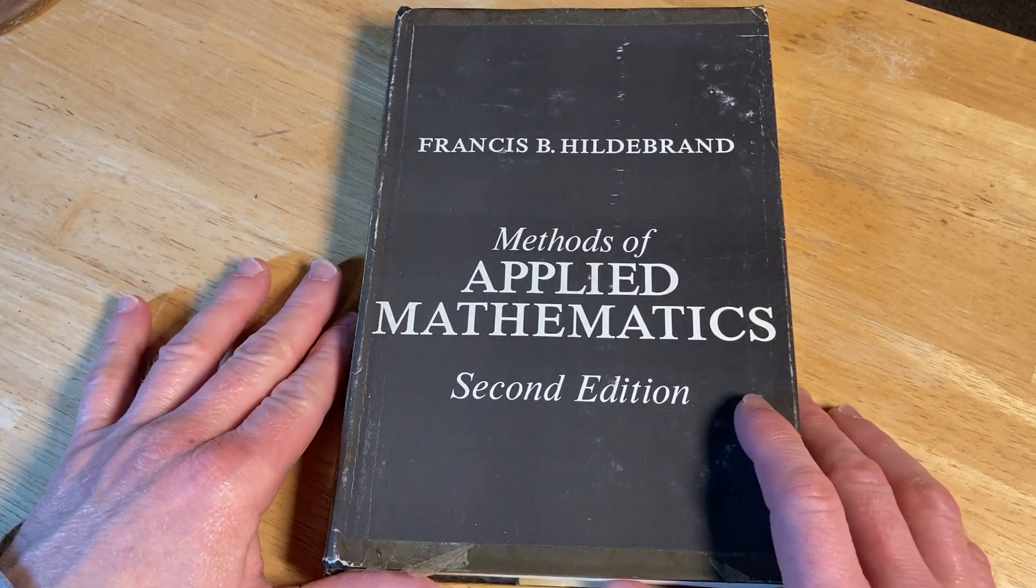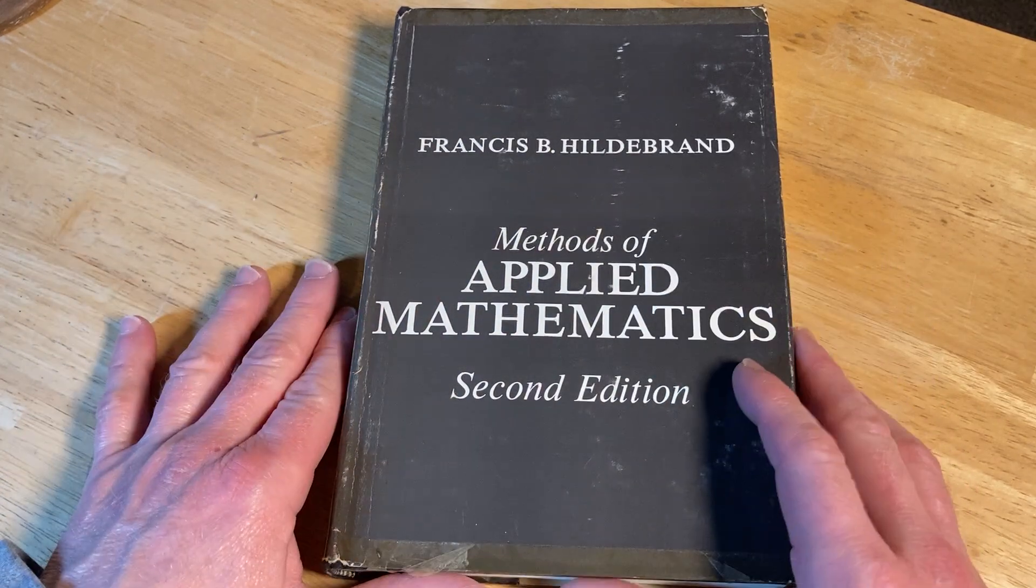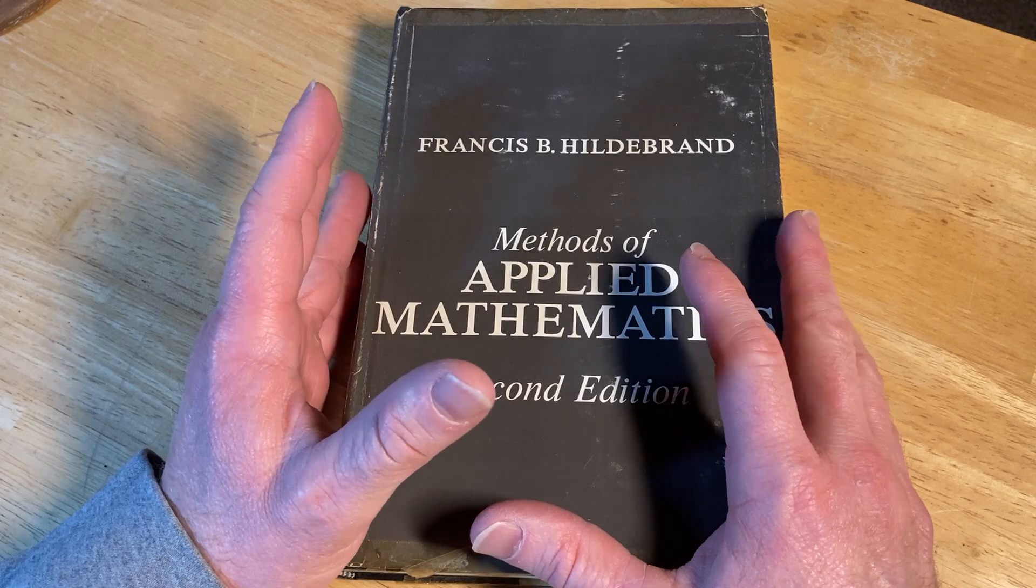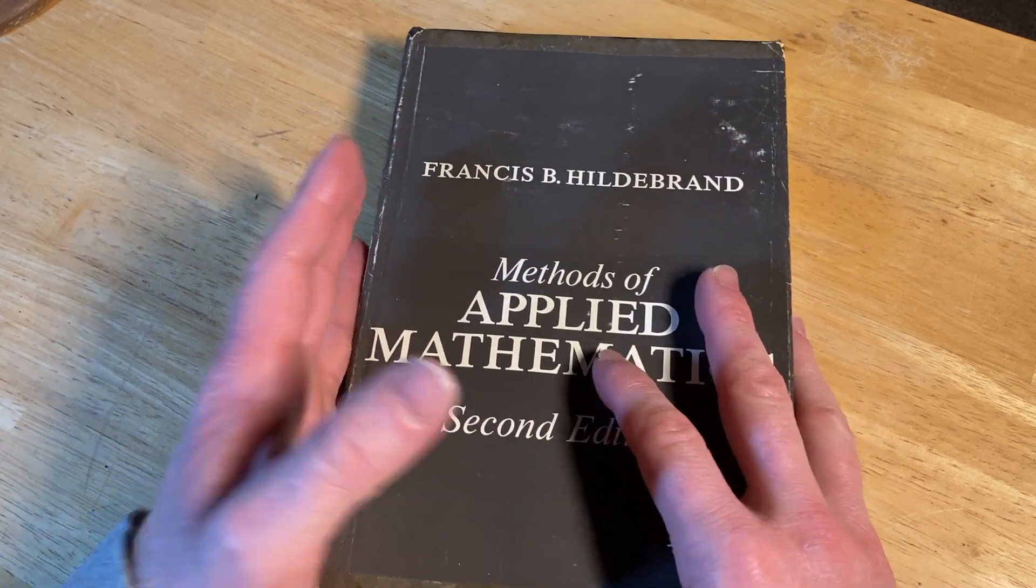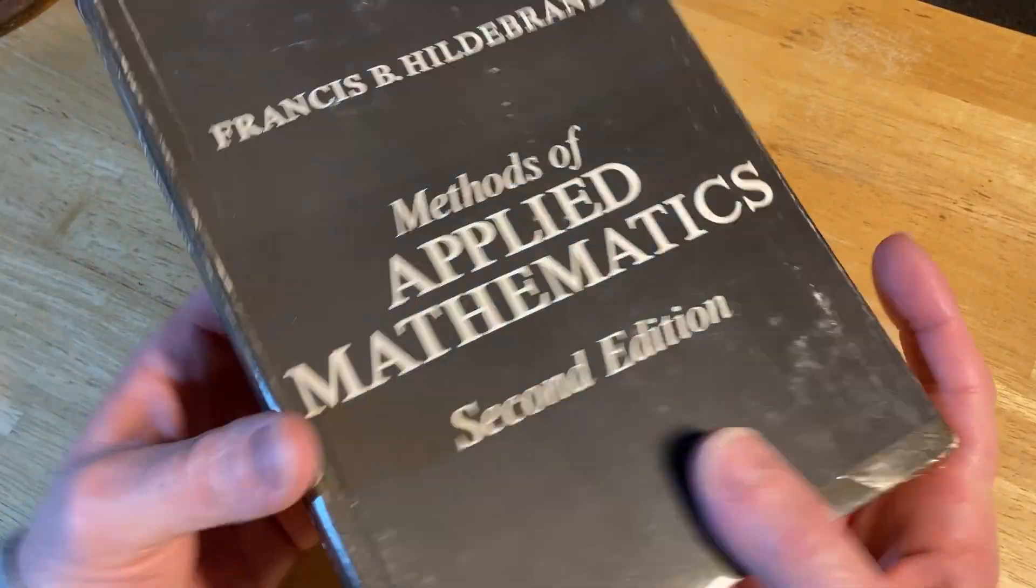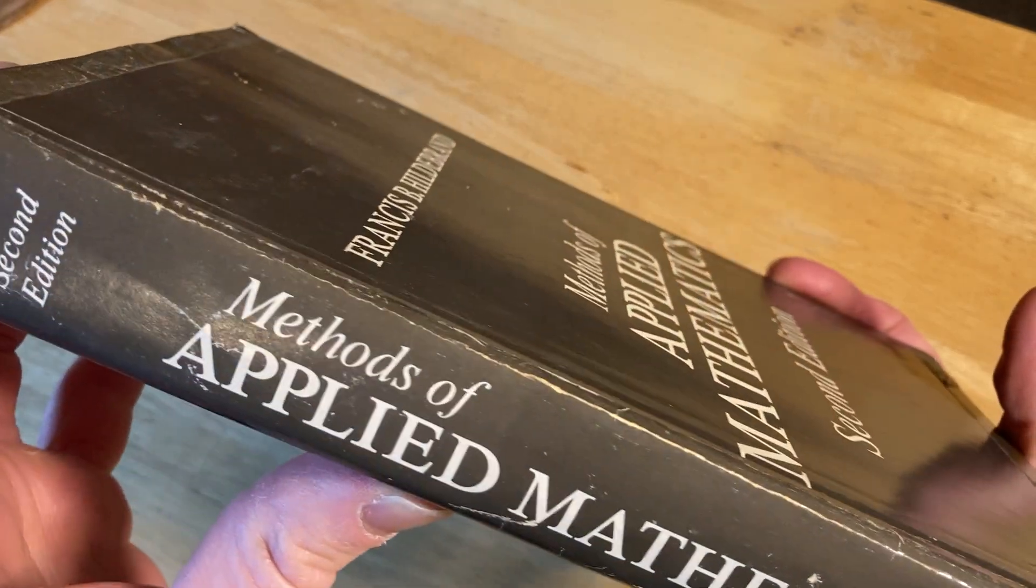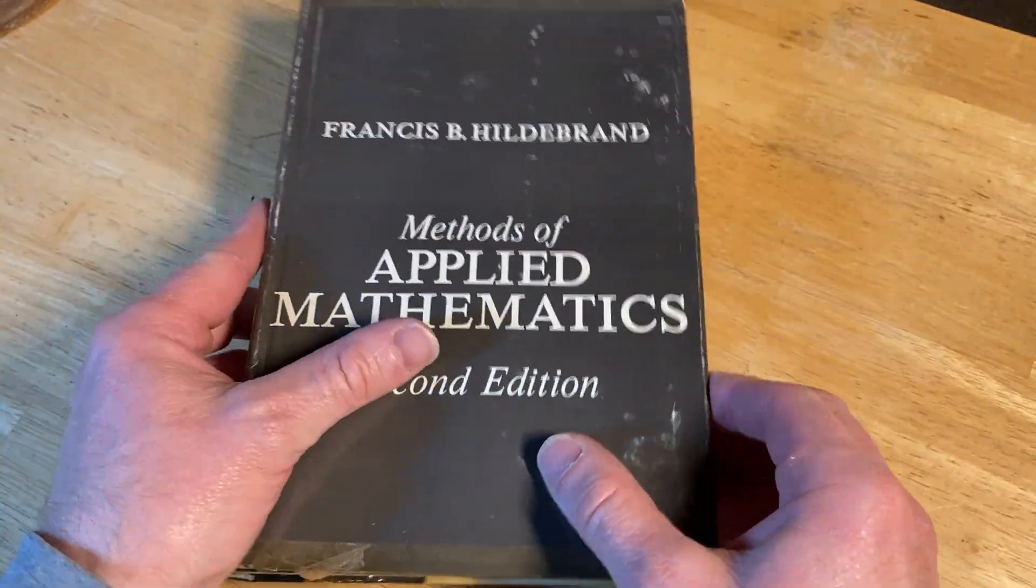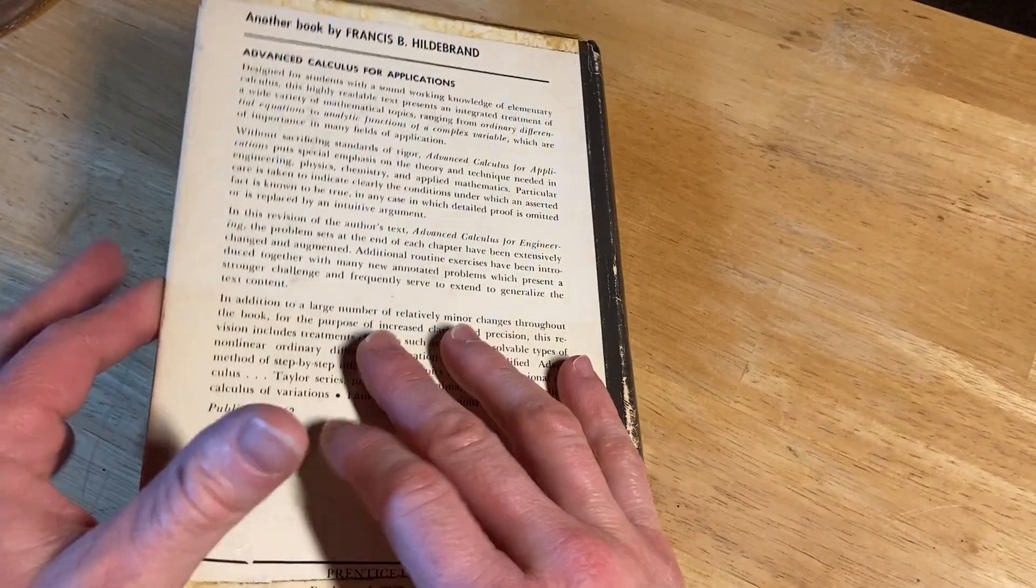This is Methods of Applied Mathematics, the second edition, and it was written by Francis B. Hildebrand. This is a hardcover book. It has the dust jacket on it. It's actually taped on, so it's been taped on.